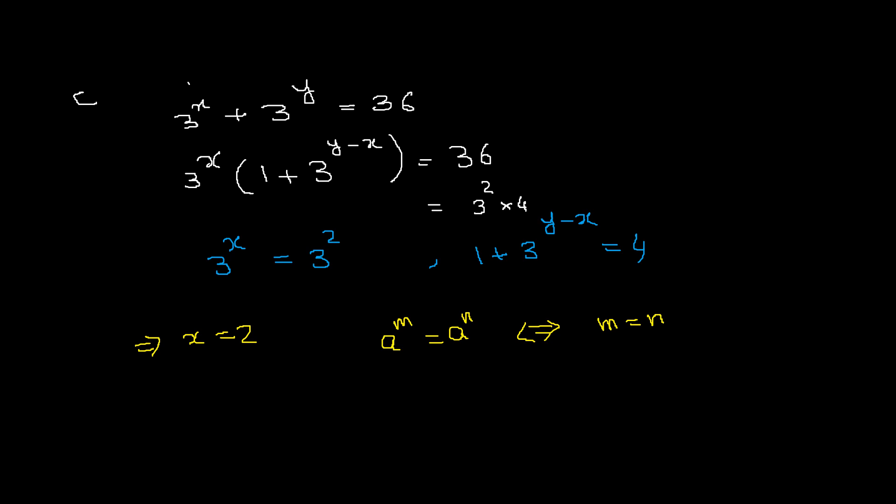Now we have to find y, and to find y we use this equation. So here there is 1 plus 3 raised to power y minus x equals to 4, and we take 1 to the other side and get 3 raised to power y minus x equals to 3, which is 3 raised to power 1. And again by using the same rule we get y minus x equals to 1.